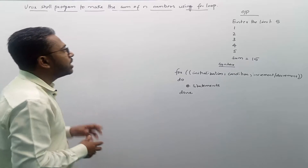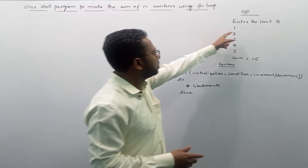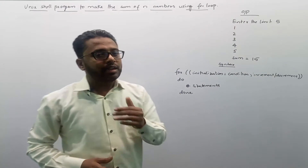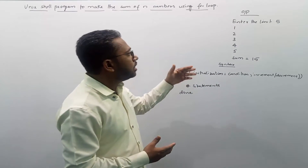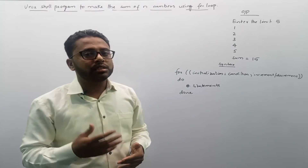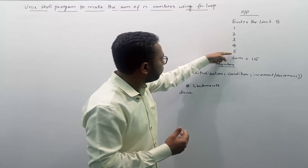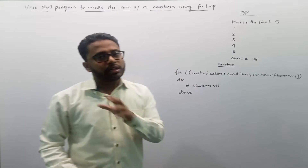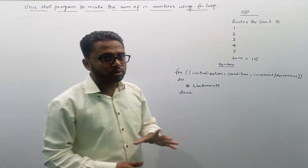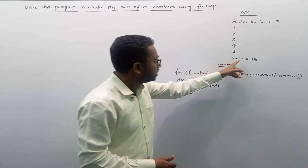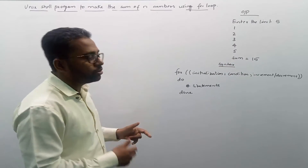When this program gets executed it will ask the user to enter the limit. If the user enters 5, our program needs to make the sum of numbers from 1 to 5, and we should get sum equals 15. We also need to display those 5 numbers along with the sum.